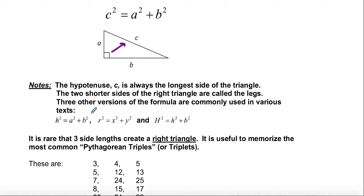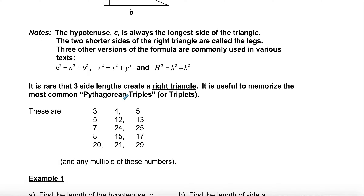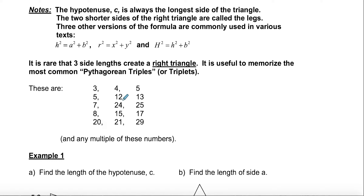Note that the hypotenuse is always c — it's the longest side. Other ways you might see this: some teachers use h for hypotenuse. On a Cartesian plane or graph you might see x and y, or r² — really any variable works, as long as the longest side opposite the 90° angle is the one that stands alone in the formula.